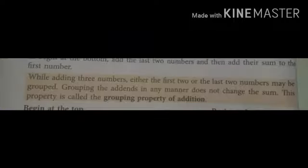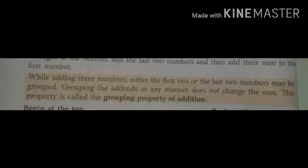While adding three numbers, either the first two or the last two numbers may be grouped. Grouping the addends in any manner does not change the sum. This property is called the grouping property of addition। means हमने first के दो numbers लिए तो last का number add किया — वही sum आता है। नहीं तो last के दो numbers add करके first का remaining number add किया — तो वही sum आएगा।